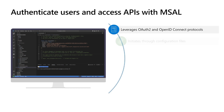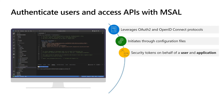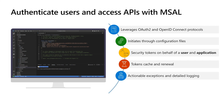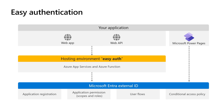MSAL eliminates the need to learn and deal directly with the OAuth 2 and OpenID Connect protocols. It simplifies the setup of your applications through configuration files. It can obtain security tokens on behalf of a user or an application, manage token cache, and ensure token renewal before expiration. Additionally, it helps to debug your application by providing actionable exceptions, data logging, and telemetry data.